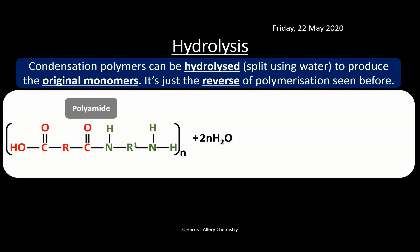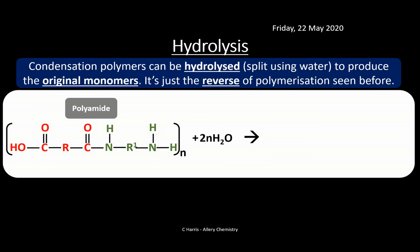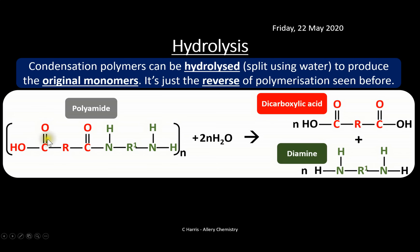Here we have a polyamide polymer that we break up using water — it's literally the reverse of polymerization. We add water to the polyamide and form our two monomer units: the dicarboxylic acid and diamine. When the exam board gives you a complex structure with benzene rings, don't worry — just spot the link. It will be either an amide or an ester link. Draw a circle around it, split it down the middle, and add a hydrogen on one side and OH on the other.